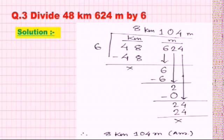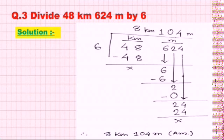Our third question is divide 48 km 624 meter by 6. We apply the second method, arranging kilometer and meter in two columns, then dividing by 6. The first number is 4, which we cannot divide by 6, so we take 48. 6×8=48. After subtraction we get 0, completing the kilometers portion. The result is 8, which is in km.